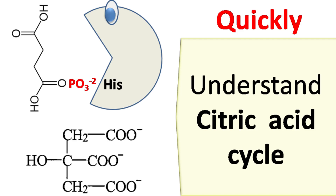Hey everyone, Quick Biochemistry Basics here. Let's talk about the Citric Acid Cycle. The Citric Acid Cycle is also known as the TCA Cycle or Krebs Cycle, named after its discoverer — hence Krebs — in the year 1937, and he was given a Nobel Prize in the year 1953.